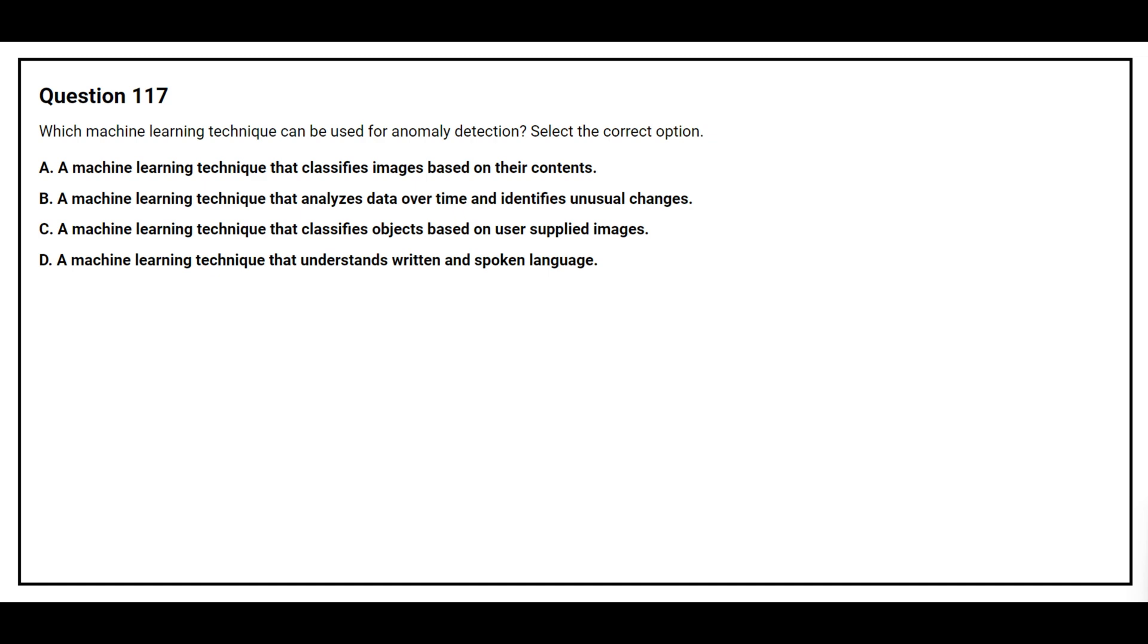Question number 117. Which machine learning technique can be used for anomaly detection? Select the correct option. Option A, a machine learning technique that classifies images based on their content. Option B, a machine learning technique that analyzes data over time and identifies unusual changes. Option C, a machine learning technique that classifies objects based on user supplied images. Option D, a machine learning technique that understands written and spoken language. The correct answer is option B, a machine learning technique that analyzes data over time and identifies unusual changes.